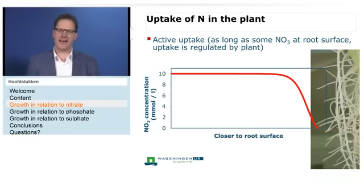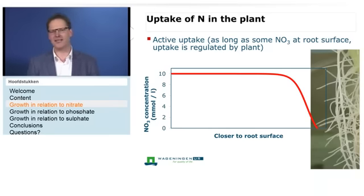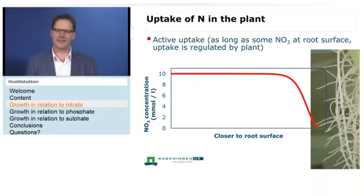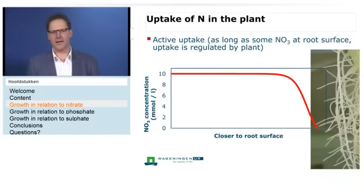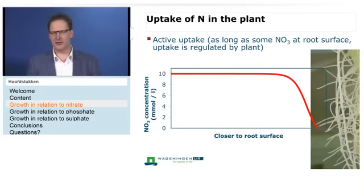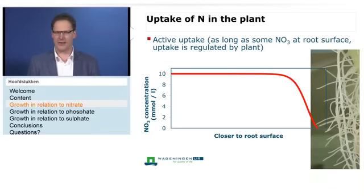The uptake of nitrogen is really an active process regulated by the plant. As long as there is some nitrate at the root surface, the uptake is regulated by the plant. If you look at the graph, you see the nitrate concentration on the y-axis and the distance from the root on the x-axis. Close to the root, concentration can be much lower because the plant is taking up the nitrate there. As long as some nitrate is at the root, uptake is mainly regulated by the plant — it determines whether to take up available nitrate.